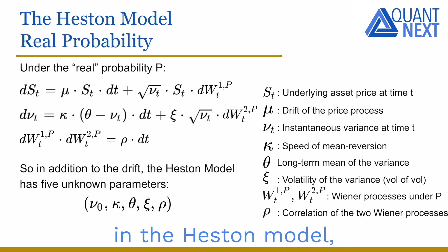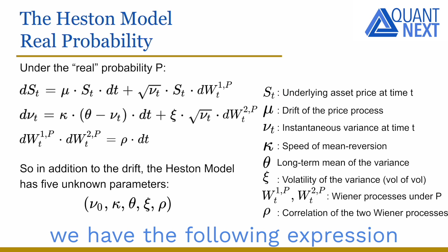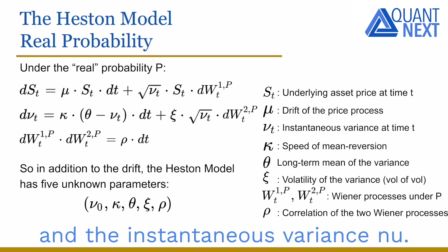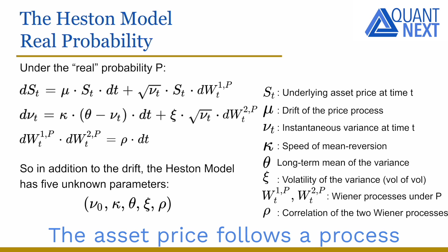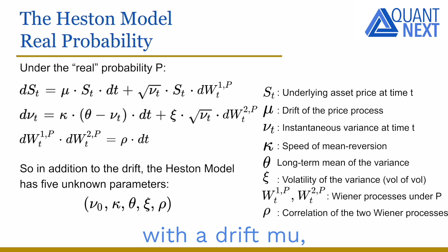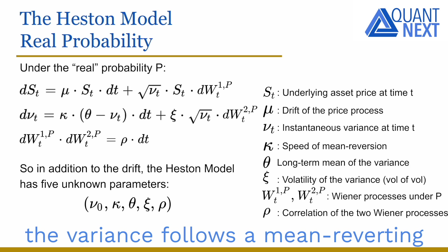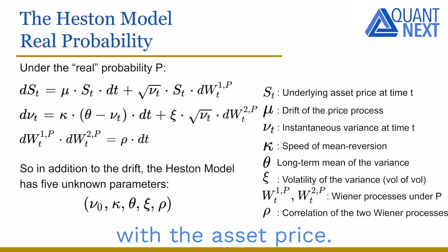As a reminder, in the Heston model under the real probability P, we have the following expression for the dynamic of the asset price S and the instantaneous variance Nu. Both are stochastic. The asset price follows a process close to a geometric Brownian motion with a drift Mu, but its volatility — the square root of the variance Nu — is stochastic as well. The model assumes that the variance follows a mean-reverting Cox-Ingersoll-Ross process, and it is correlated with the asset price.